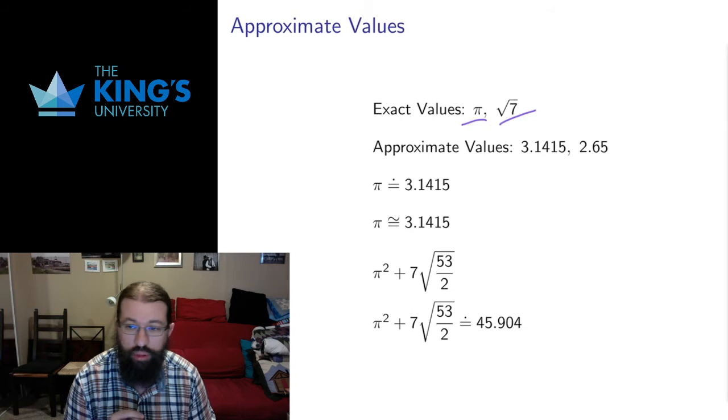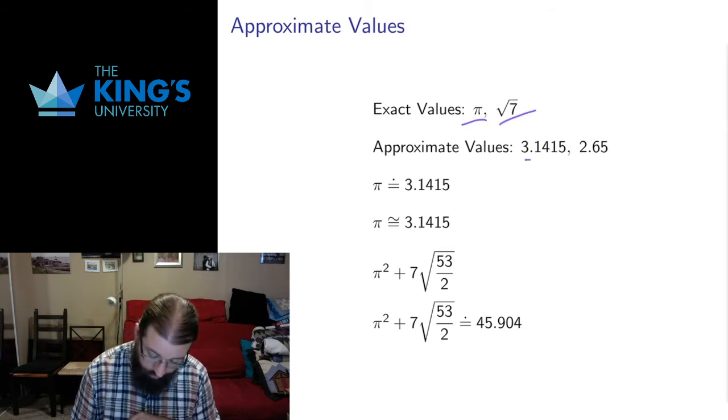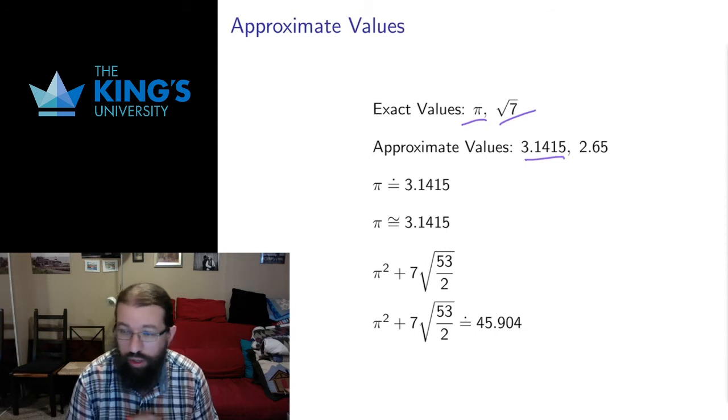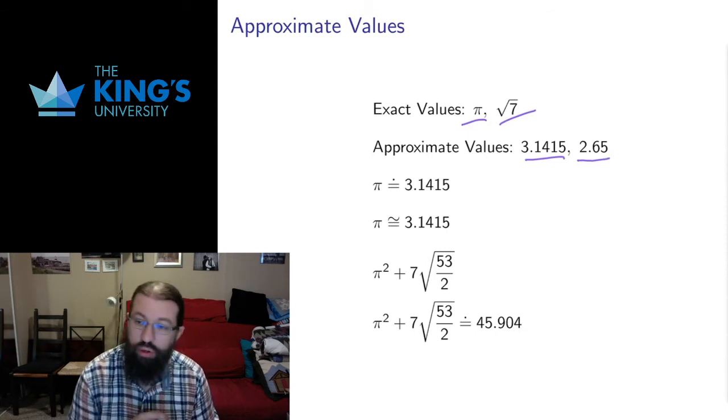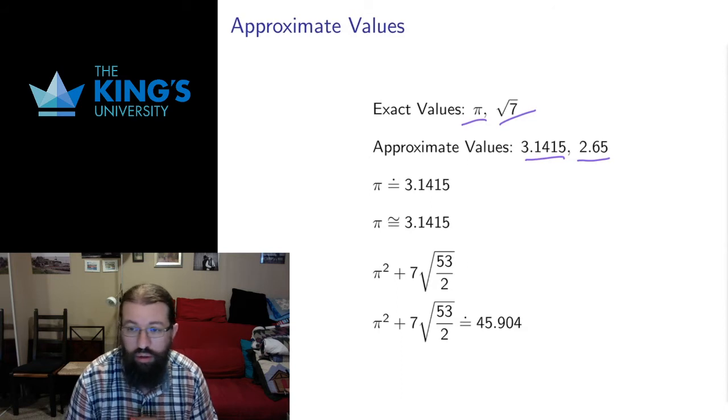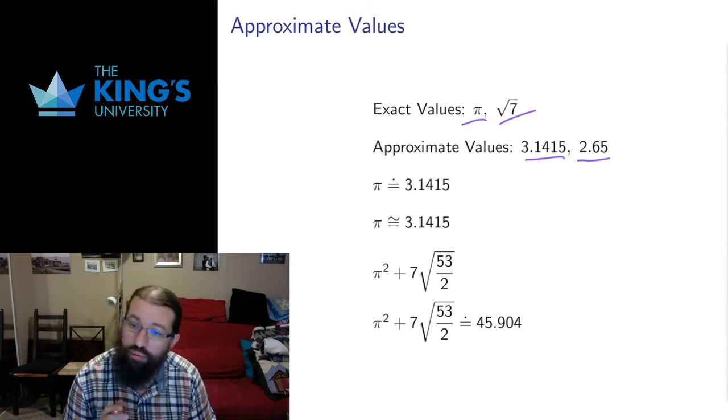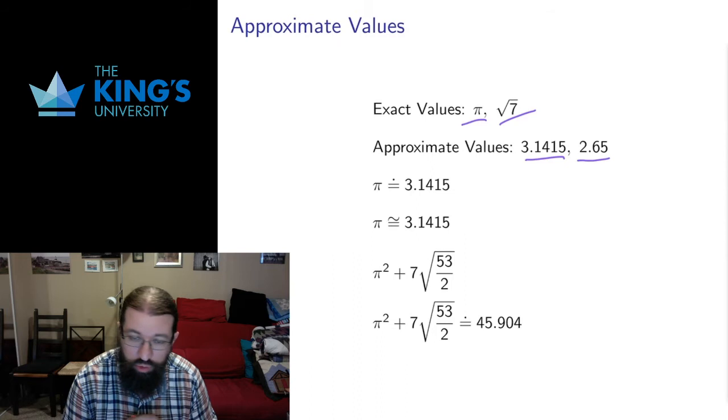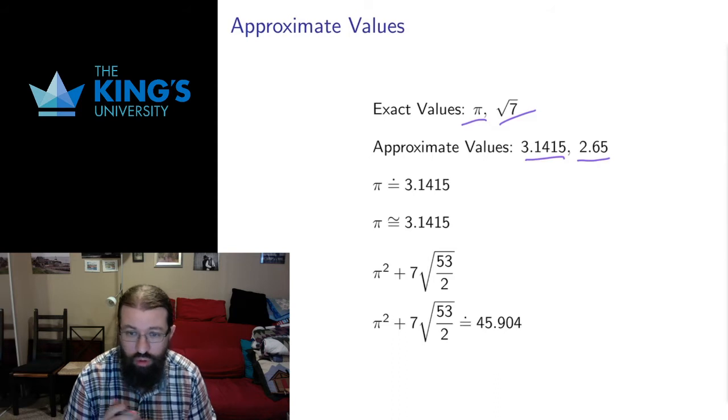However, if I want to do certain kinds of arithmetic, it's very useful to have a decimal expansion for these things. So π is approximately 3.1415, √7 is approximately 2.65. These are approximate values. They're not exact. π is not exactly 3.1415. It has other terms that adjust it. But this is up to four decimals accurate, which is good for a lot of purposes.